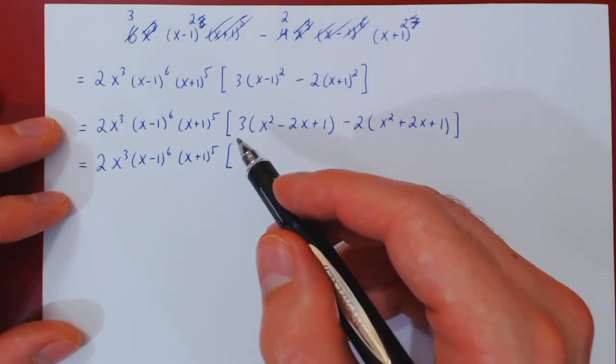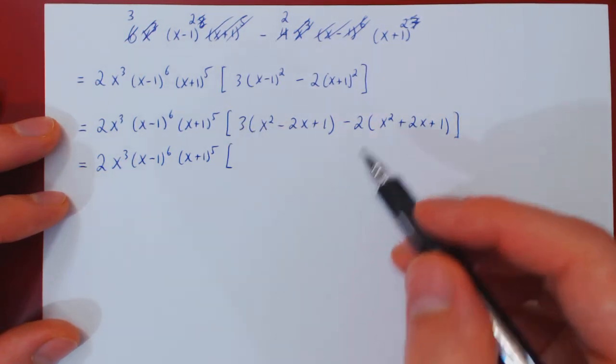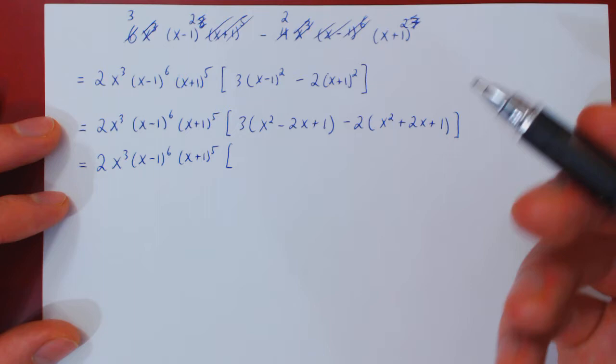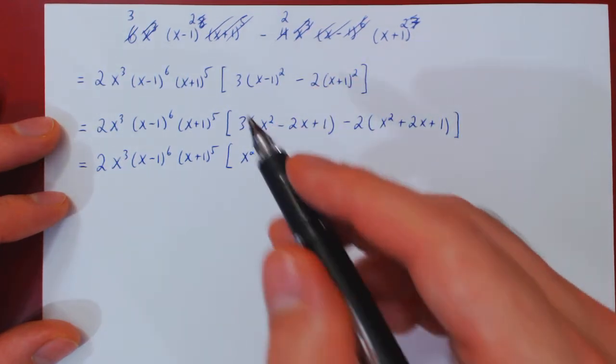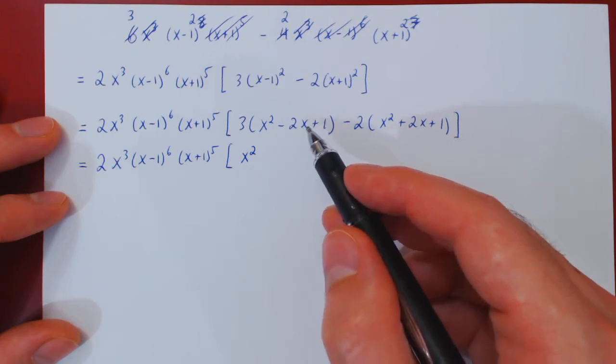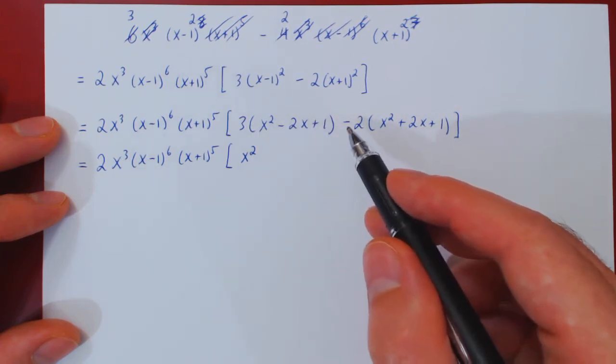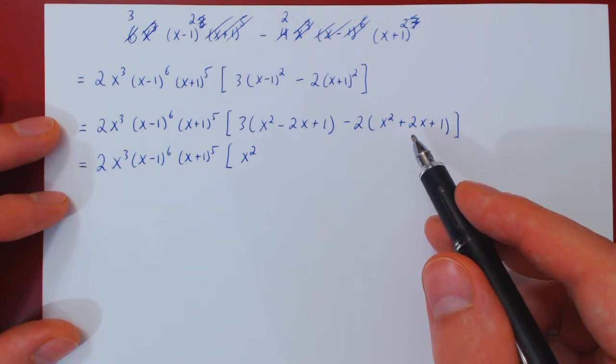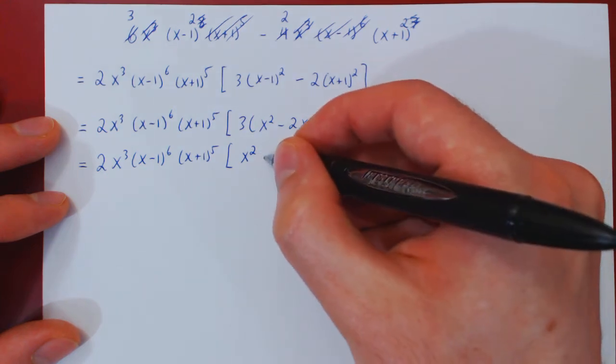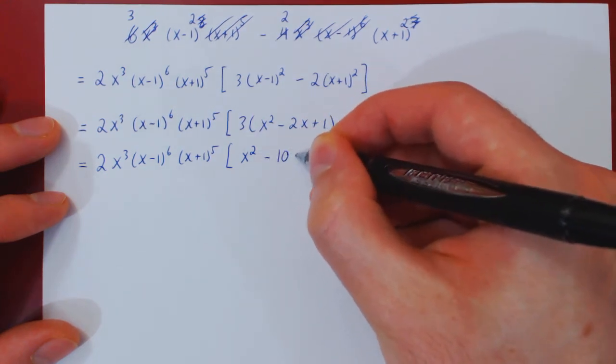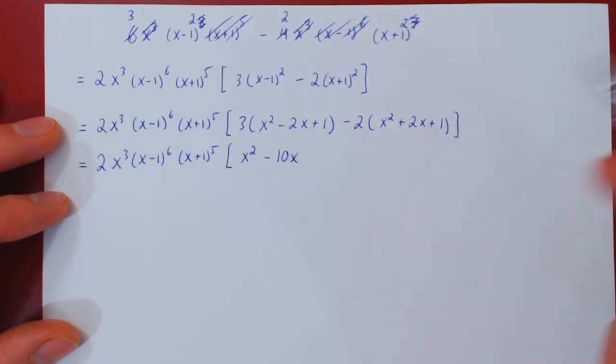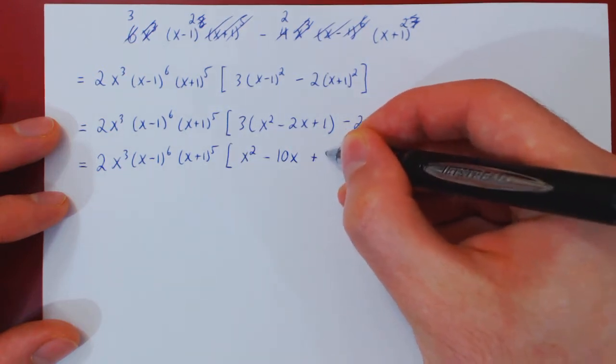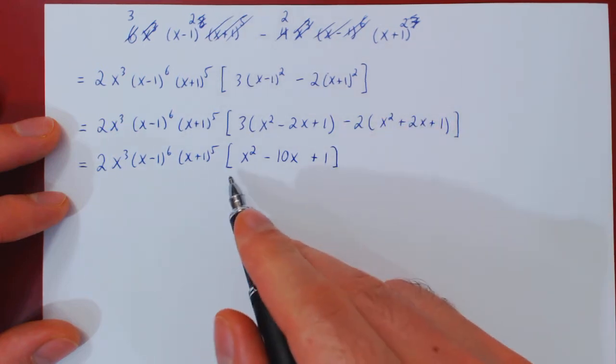So let's look at the multiples of x squared first. We have 3x squared minus 2x squared, so we're left with a single x squared. Then the multiple of x, negative 3 times 2x is negative 6x, minus 2 times 2x is negative 4x, so that's negative 10x, and the constant term plus 3 minus 2 is plus 1. And now we have the leftover quadratic.